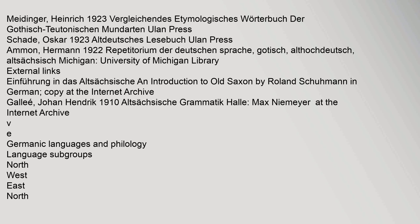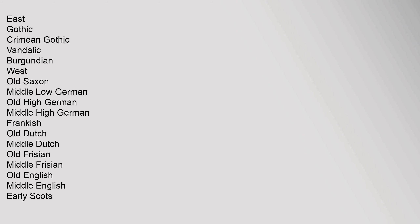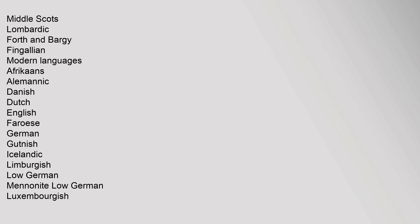Additional bibliography includes Meidinger, Heinrich (1923), 'Vergleichendes etymologisches Wörterbuch der gothisch-teutonischen Mundarten,' Uhlan Press. The Germanic language family tree includes Proto-Germanic giving rise to North Germanic (Proto-Norse, Old Norse, Old Swedish, Old Norwegian), East Germanic (Gothic, Crimean Gothic, Vandalic, Burgundian), and West Germanic branches including Old Saxon, Middle Low German, Old High German, Middle High German, Frankish, Old Dutch, Middle Dutch, Old Frisian, Middle Frisian, Old English, Middle English, Early Scots, and modern languages such as Afrikaans, Danish, Dutch, English, Faroese, German, Icelandic, Low German, and Luxemburgish.